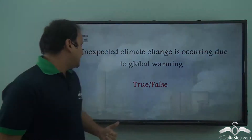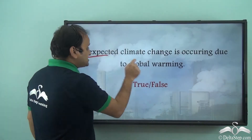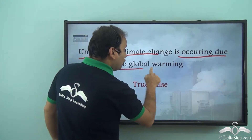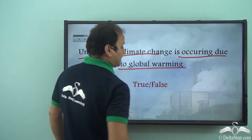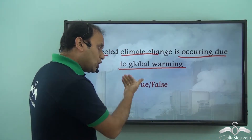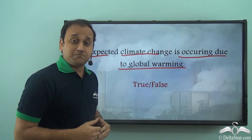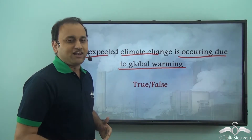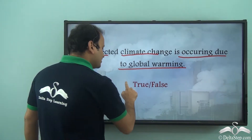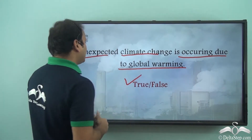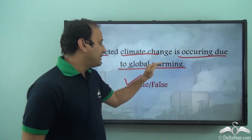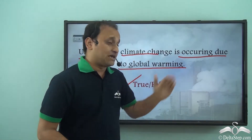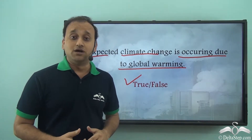Can you tell me: is it a true or false statement that unexpected climate change is occurring due to global warming? Well, it is definitely a true statement. Global warming is responsible for the unexpected climate changes which you see around the world.